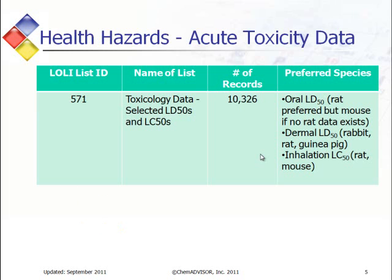This table represents what we have in Lawley for acute toxicity data. At the current state, we do have one Lawley list which includes selected LD50 and LC50 data. LD stands for lethal dose — 50 means 50% of the exposed population resulted in death after administration of the test substance. LC stands for lethal concentration 50. For this particular Lawley list, we have three routes of exposure: oral, dermal, and inhalation. In parentheses, we include the preferred species — rat for oral LD50, and if not available, then mouse.